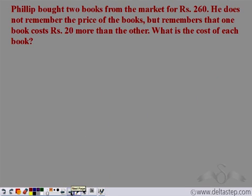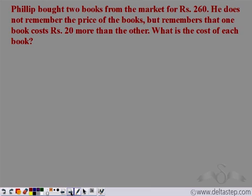Philip bought two books from the market for rupees 260. He does not remember the price of the books but remembers that one book costs rupees 20 more than the other. What is the cost of each book? Philip forgot the price of the books but remembered that one costs 20 more than the other. So if Philip has learnt algebra well, he can very easily use algebra to solve for the price of the two books.